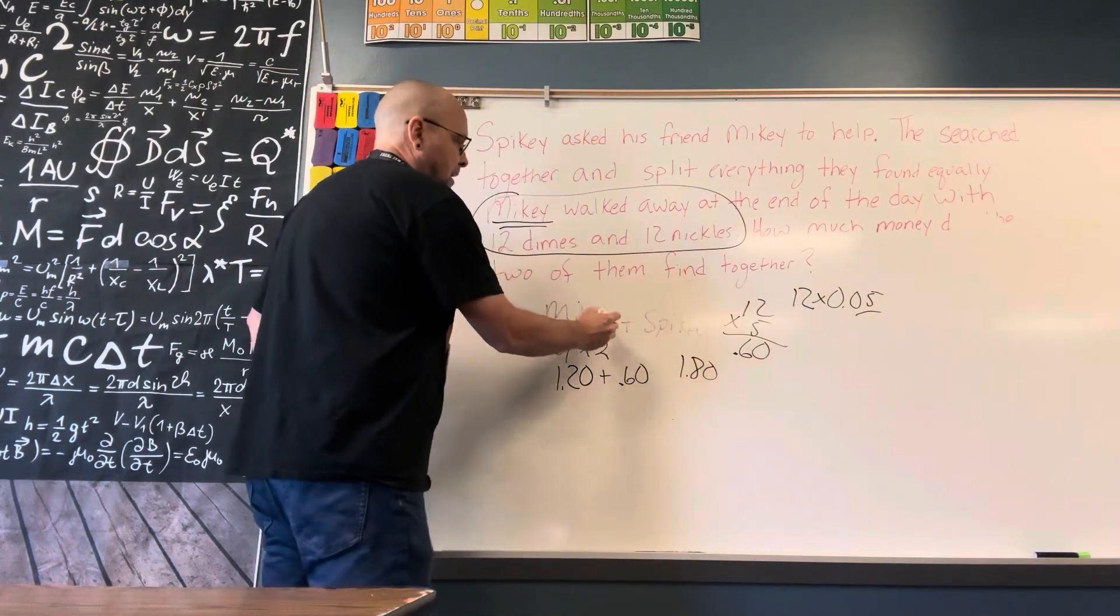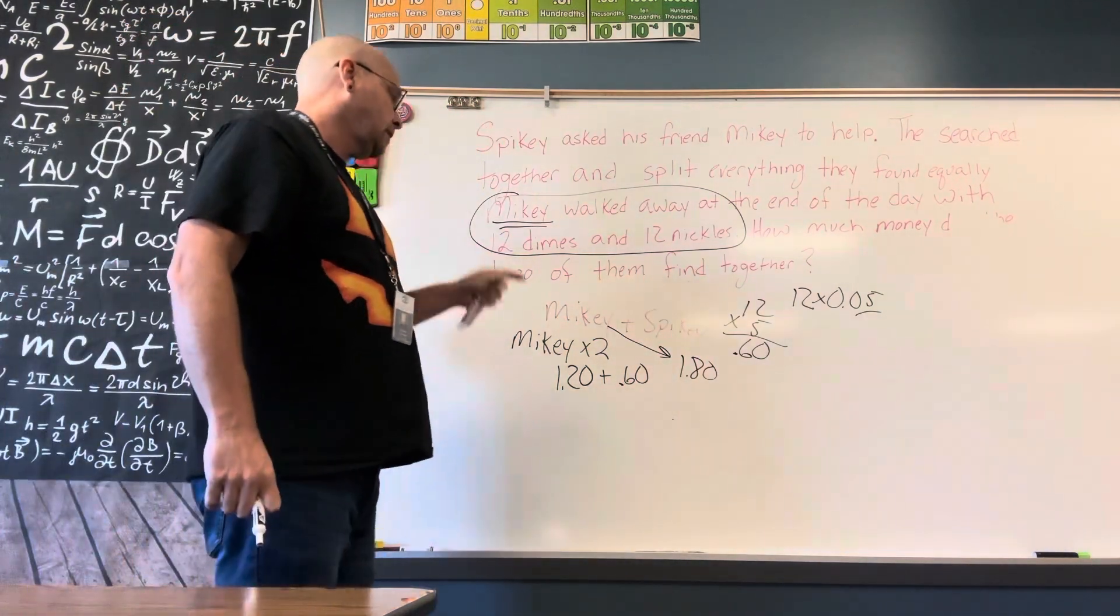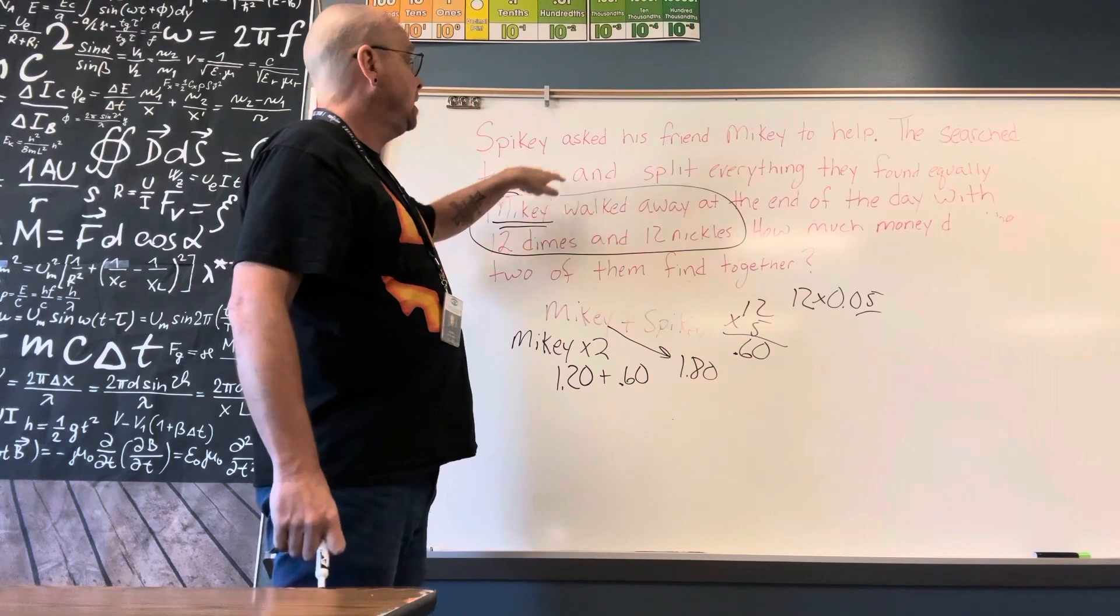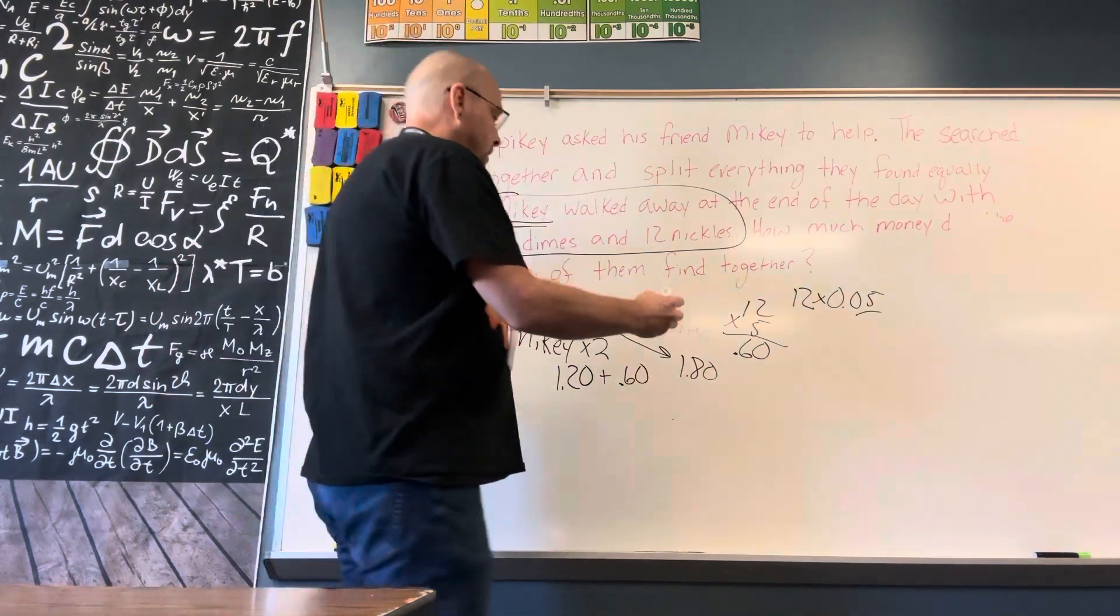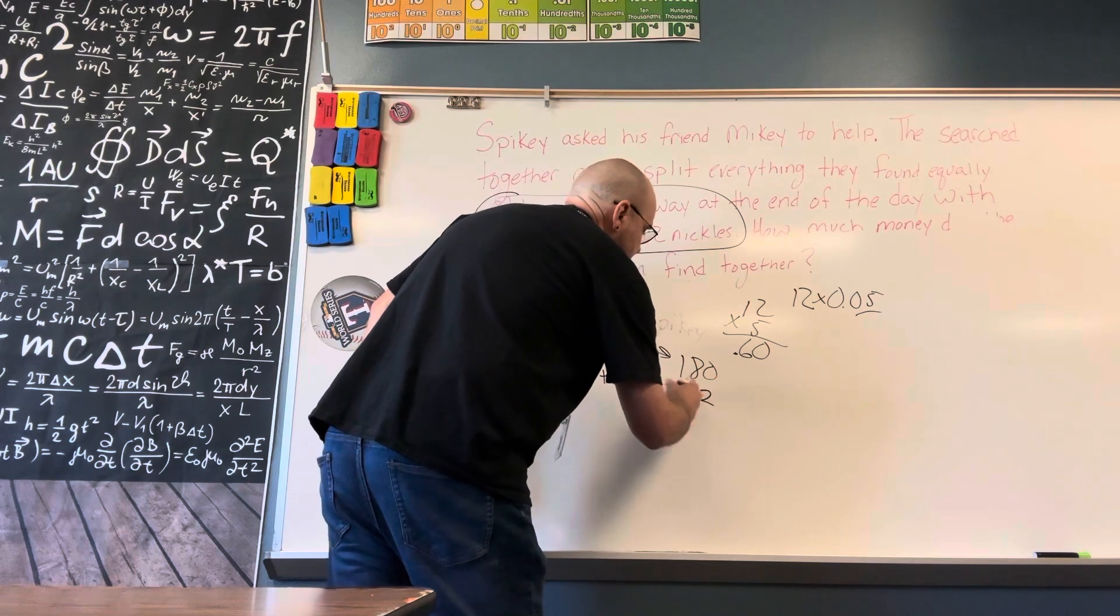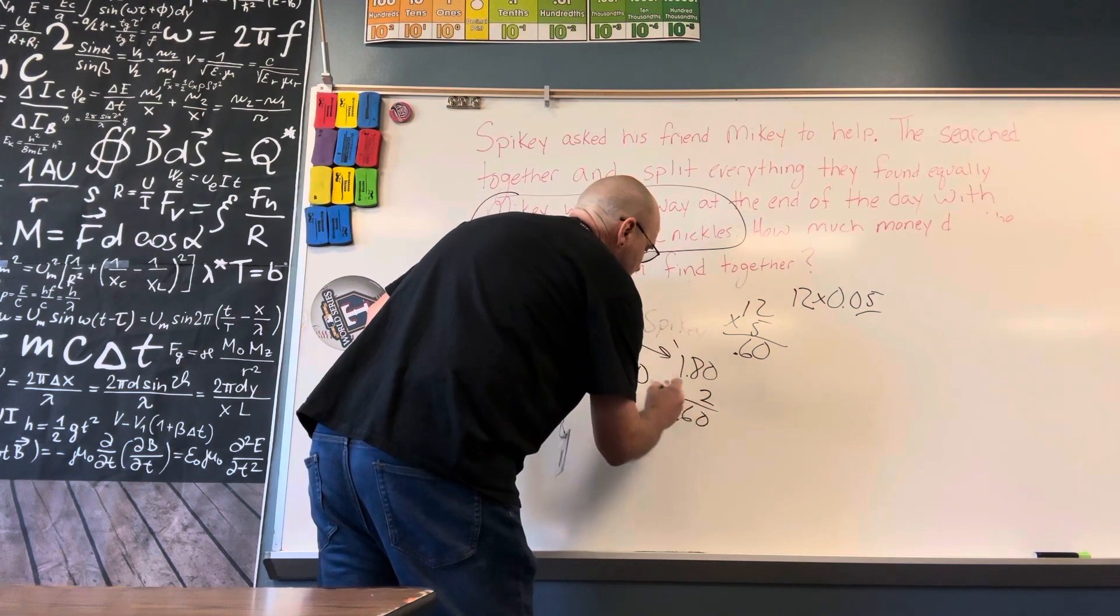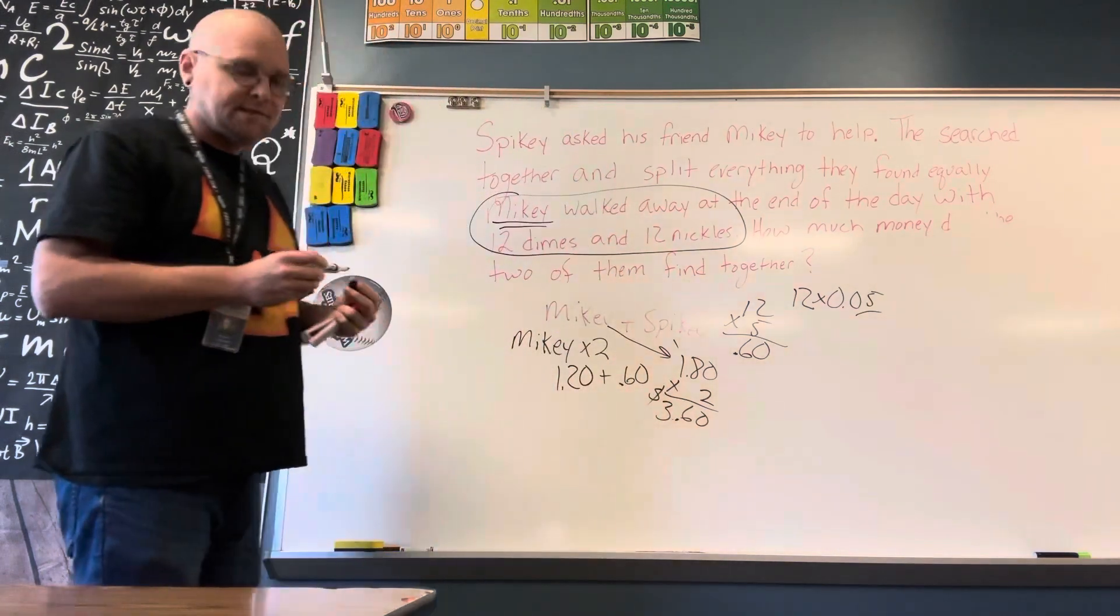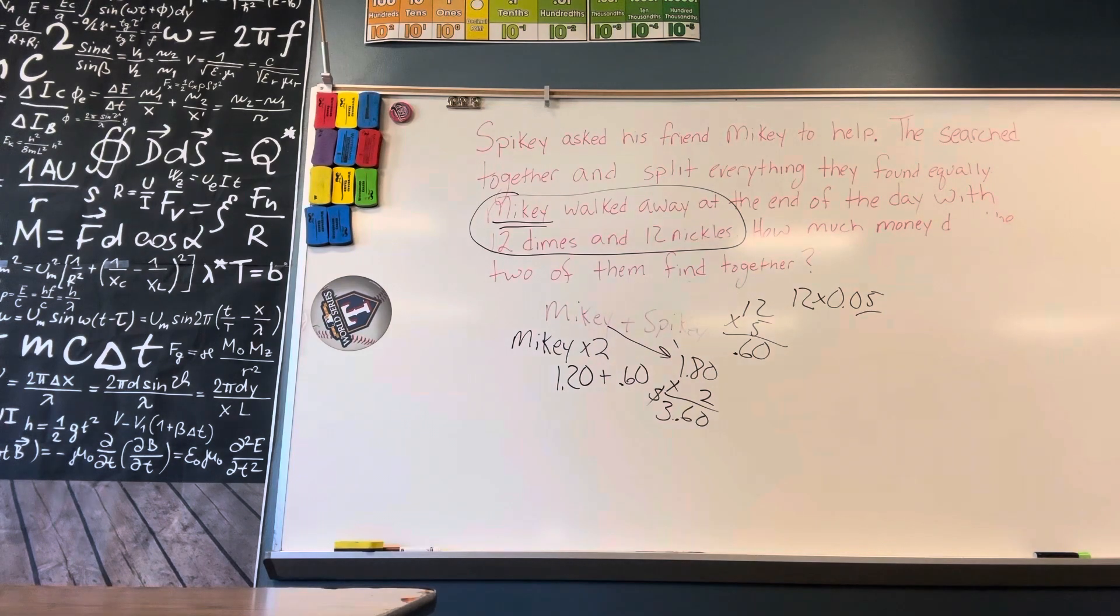That means Mikey had one dollar and 80 cents. Now if we take Mikey's and multiply it by two, because Mikey and Spiky have the same amount, one dollar and 80 cents times two is three dollars and 60 cents. So they found three dollars and 60 cents all together. Way to go Mikey and Spiky!